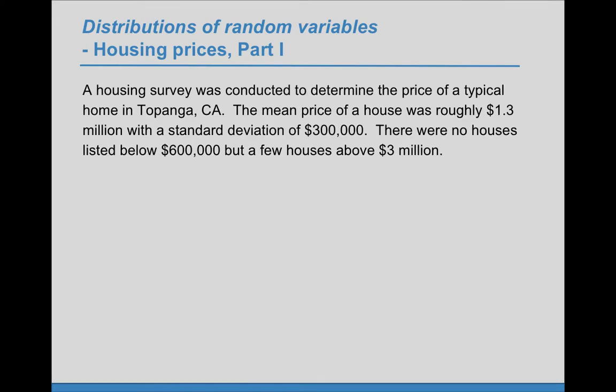A housing survey was conducted to determine the price of a typical home in Topanga, California. The mean price of a house was roughly $1.3 million with a standard deviation of $300,000. There are no houses listed below $600,000, but a few houses above $3 million.